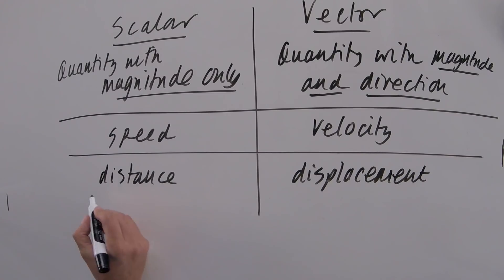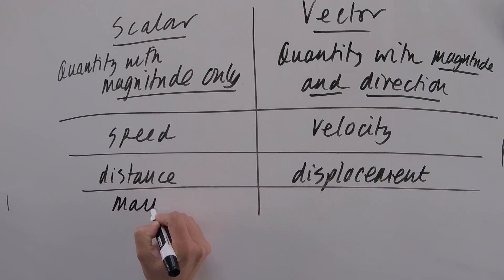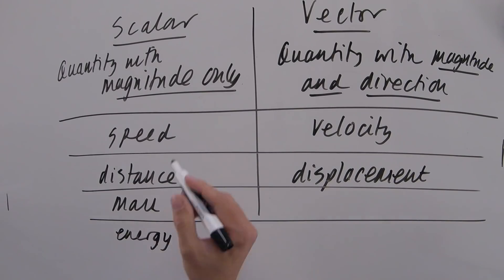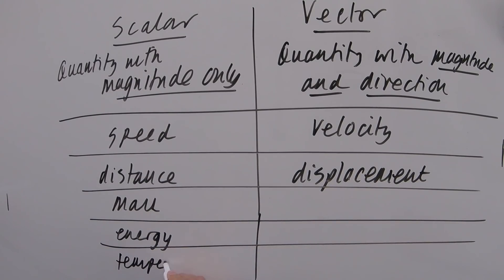Some other common scalars would be mass, because it's just a number. So you've got a mass of 60 kilograms, 50 kilograms. Another common one is energy, so you've got a kinetic energy of 150 joules. Another one would be, these are the key ones actually. So these are the four you need to know. Another one would be temperature, because it's just a number. So 60 degrees, room temperature, 20 degrees.